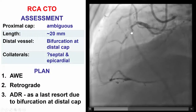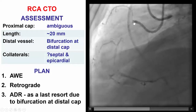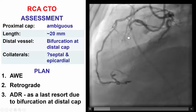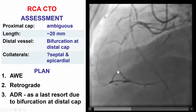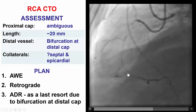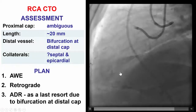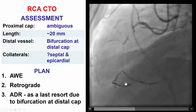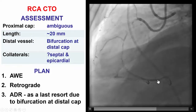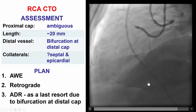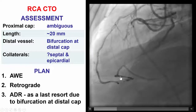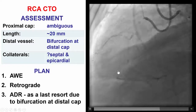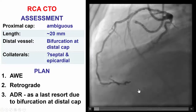The patient had a right coronary artery CTO with an ambiguous proximal cap, a length of approximately 20 mm, and most importantly, a bifurcation of the distal cap involving a large PDA and a large posterolateral vessel. The PDA was filling via epicardial collaterals from the LAD, and the posterolateral was filling retrograde from the posterior descending artery. An important part of this case was to achieve recanalization of both the PDA and the posterolateral branch.